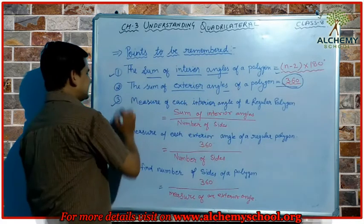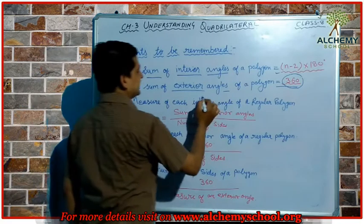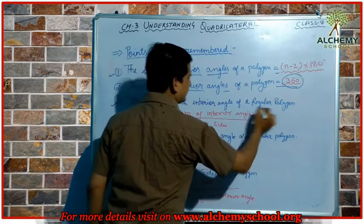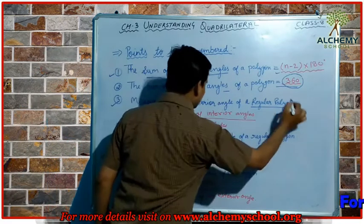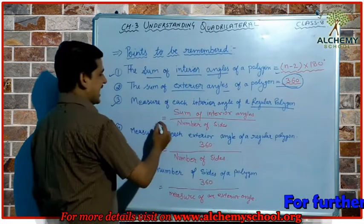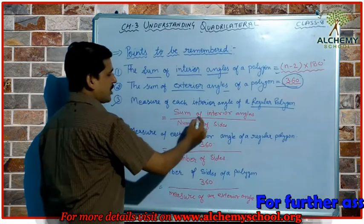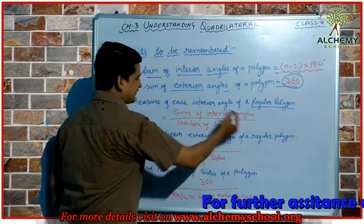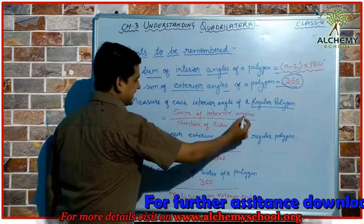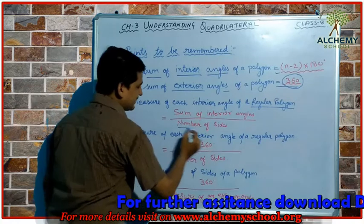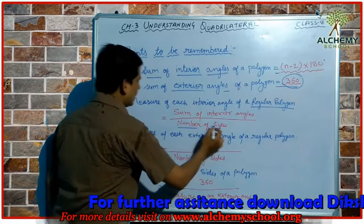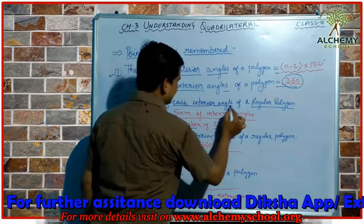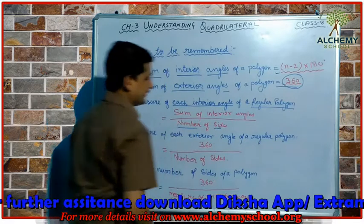Next, the measure of each interior angle of a regular polygon can be found by dividing the sum of the interior angles by the number of sides.